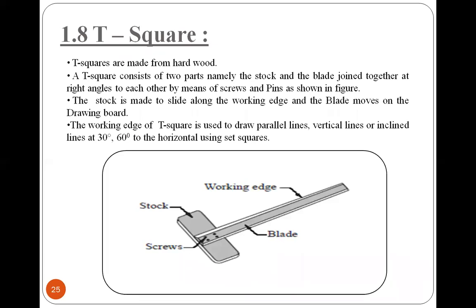The T-square is made up of hardwood and consists of two parts: the stock and the blade, joined together at a right angle by means of screws and pins as shown in the figure. The stock moves along the board edge. The working edge of the T-square is used to draw parallel lines, vertical lines, and inclined lines at angles of 30 and 60 degrees to the horizontal using the set square.